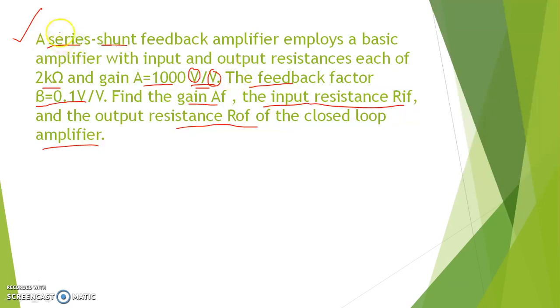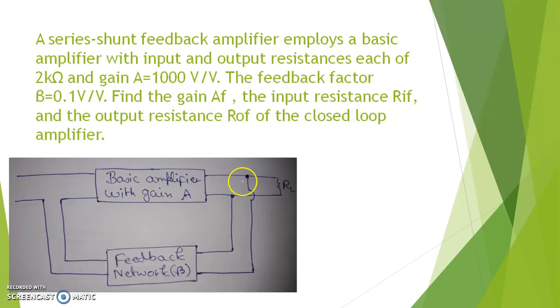This is series shunt. That means, input is in series, that is mixing network is basically in series and the output network, the sampling network is basically shunt. So, this is basically voltage sampling, voltage mixing feedback topology. Let us see, we have to draw, in the first step we have to draw the feedback topology.